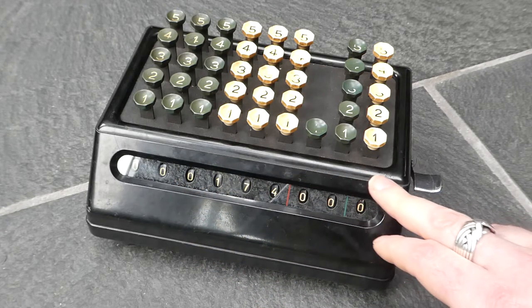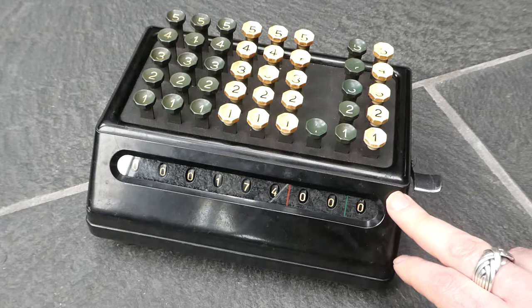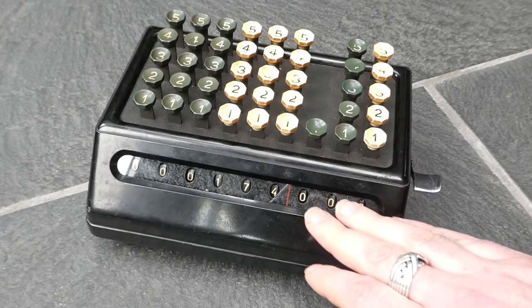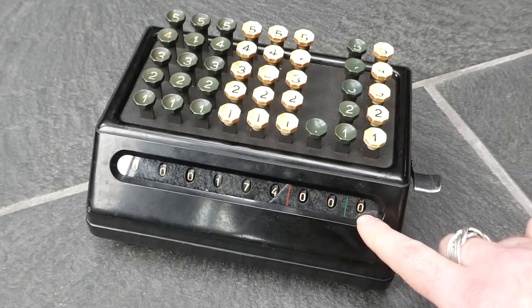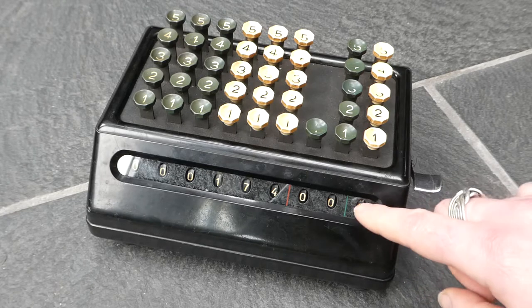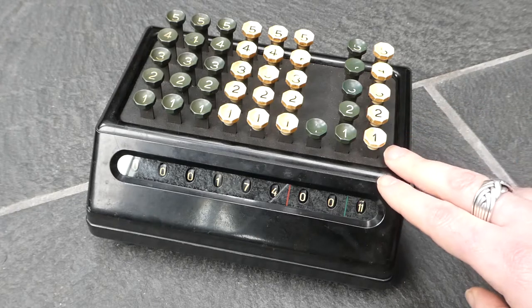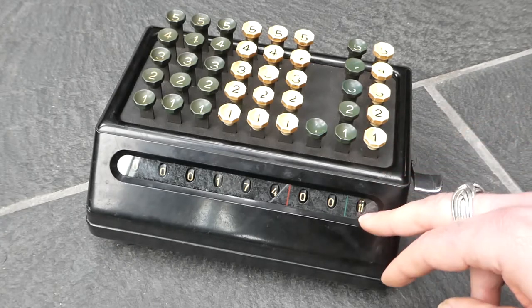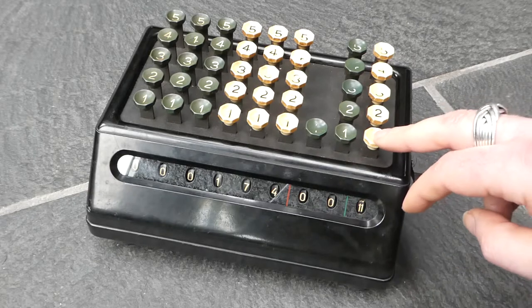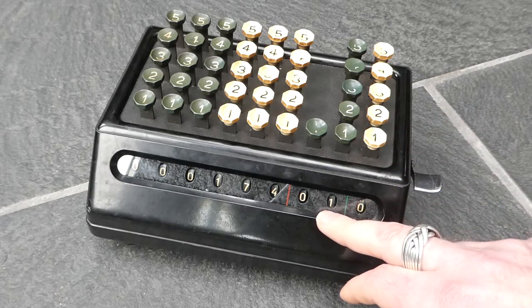This particular model is the model S. It uses sterling currency. So this first column is for pennies and counts up to 11 pennies. When it reaches 12 it carries over because 12 pennies make one shilling.